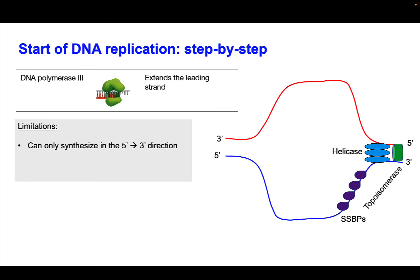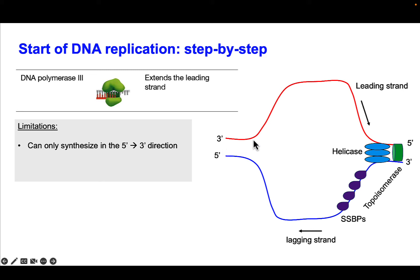DNA polymerase 3 can only synthesize in the 5 prime to 3 prime direction — it can only work in the direction DNA is polymerized. Consider the top strand going 3 prime to 5 prime. If we build a daughter strand off this parental strand, it has to be anti-parallel, so it's going to go 5 prime to 3 prime. This is called the leading strand, or the continuous strand, because it's going to follow along every time the helicase opens and topoisomerase relieves the tension — it just keeps plugging along in the same direction.